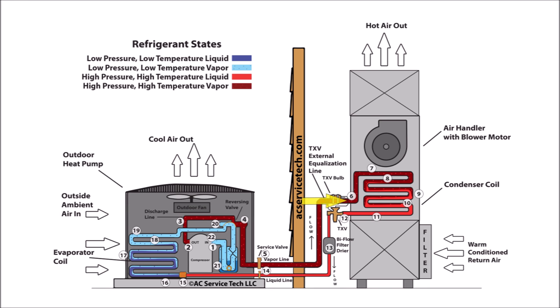At step six, the superheated vapor enters into the condenser coil where it starts to desuperheat while it's in vapor form. In step seven, we have the superheated vapor refrigerant rejecting heat and lowering in temperature — this is referred to as desuperheating. At step eight, the superheated vapor continues to reject heat until it has rejected enough heat to change into the saturated state, where liquid and vapor both exist at the same time. At step nine, we have the saturated refrigerant rejecting heat but not lowering in temperature.